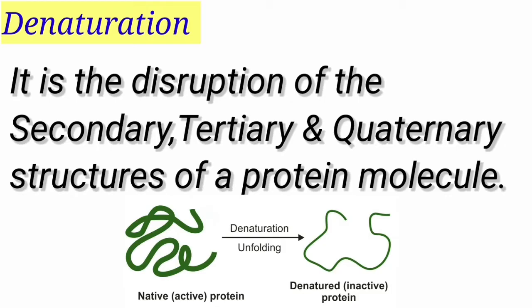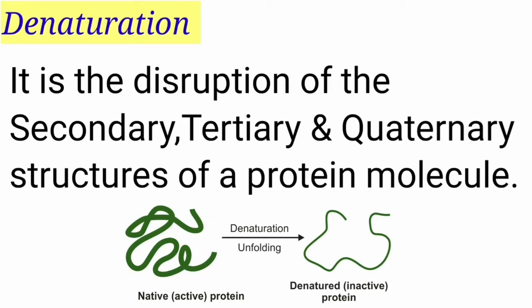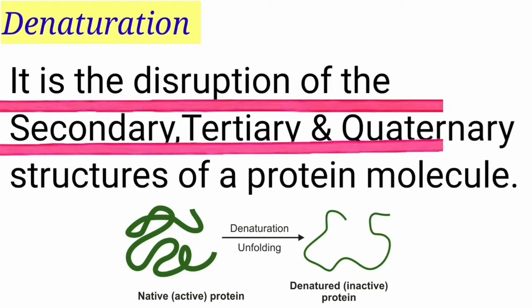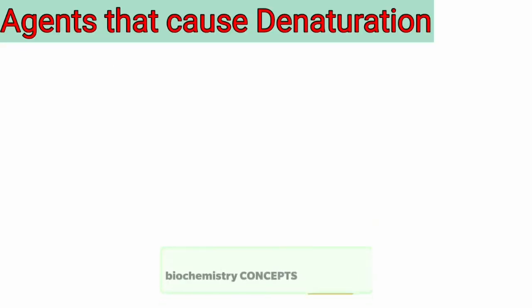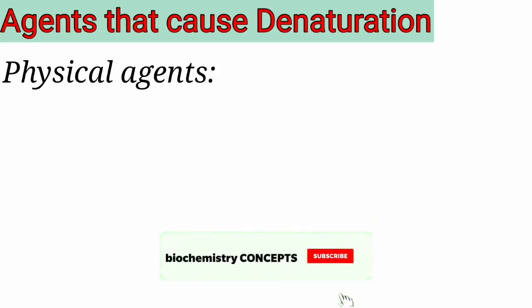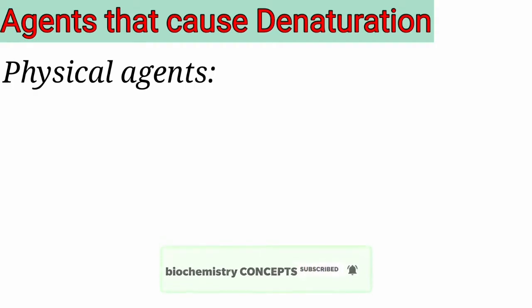During denaturation, the primary structure of a protein is not affected, but the remaining structures — quaternary, tertiary, and secondary — are affected.